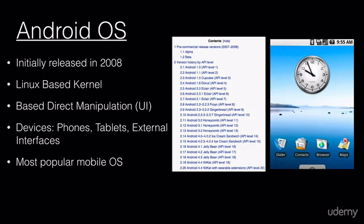As far as devices go, Android is available on phones, tablets, and many other external interfaces. You're seeing Android utilized in TV set-top boxes, smart watches, and many other external hardware. It is the most popular mobile OS — currently the most popular mobile operating system — as it sells across multiple devices and multiple versions, with tons of hardware and software variations.